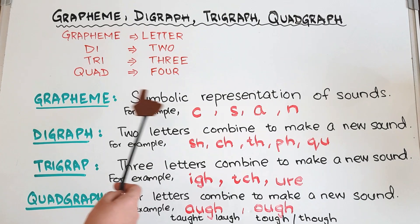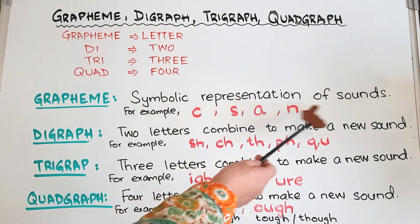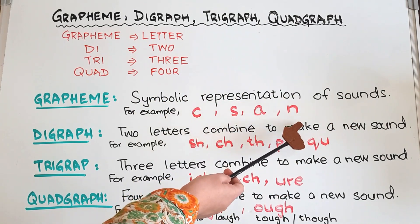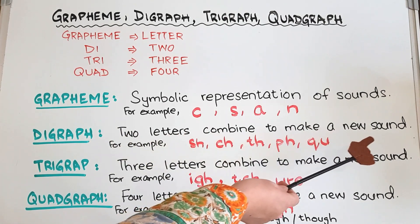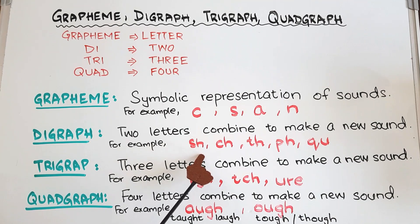So grapheme is simply the symbolic representation of sounds like C, S, A, N. Digraphs are two letters combined to make a new sound. When S and H combine they give the 'sh' sound. This is CH, this is TH, this is PH, and this is QU, and we have more than these.